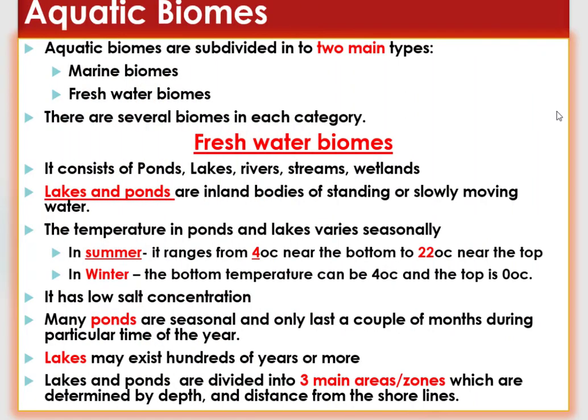Hello students, welcome to this lesson on aquatic biomes. In the previous successive classes, we have studied terrestrial biomes like tropical rainforest, temperate forests and grassland, savannah grassland, desert, taiga and tundra biomes. In this lesson, we will study aquatic biomes. Aquatic biomes are subdivided into two main types based on their salt content: marine biomes and freshwater biomes.